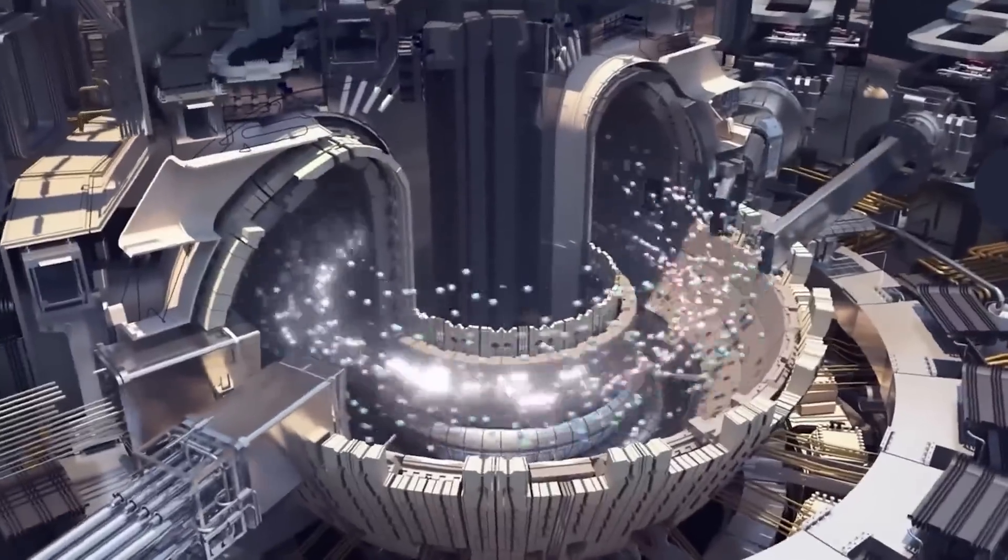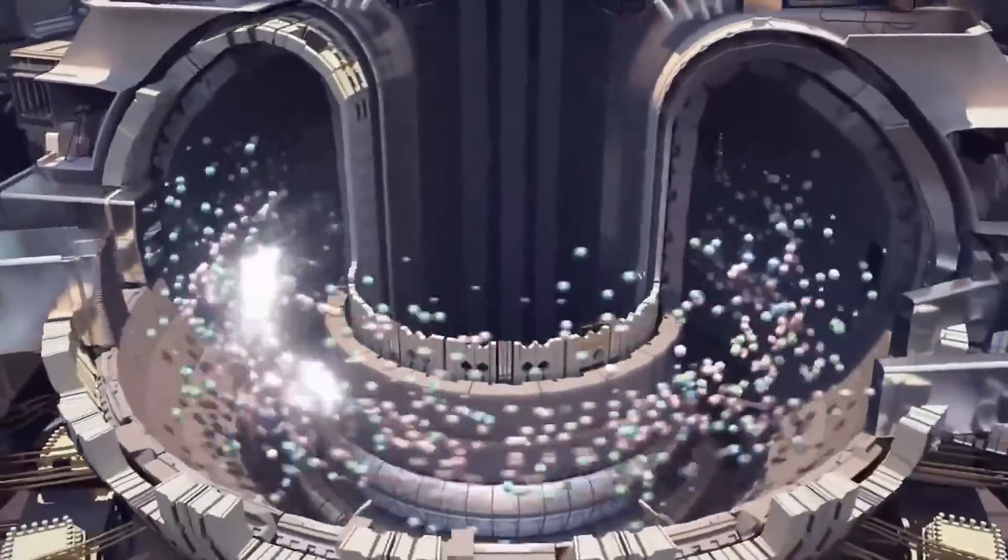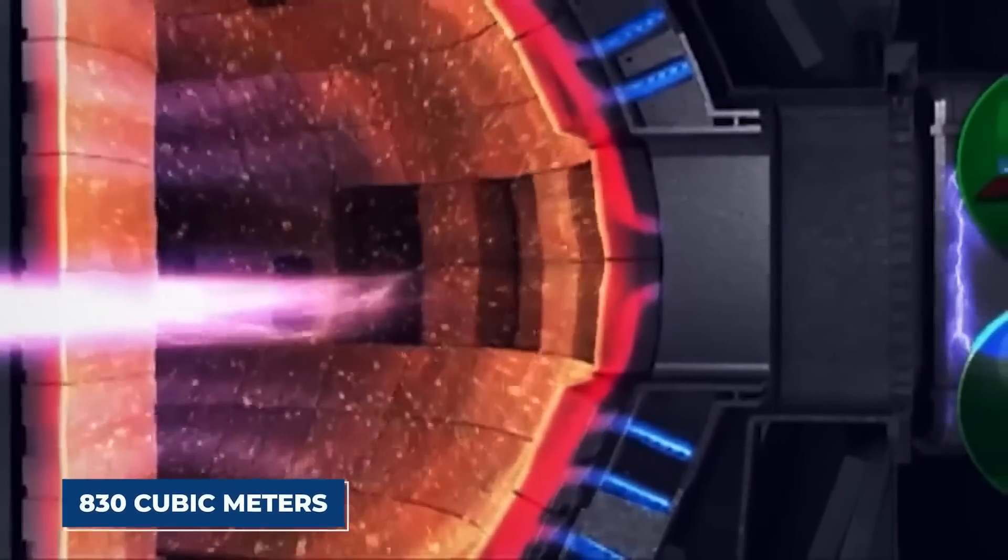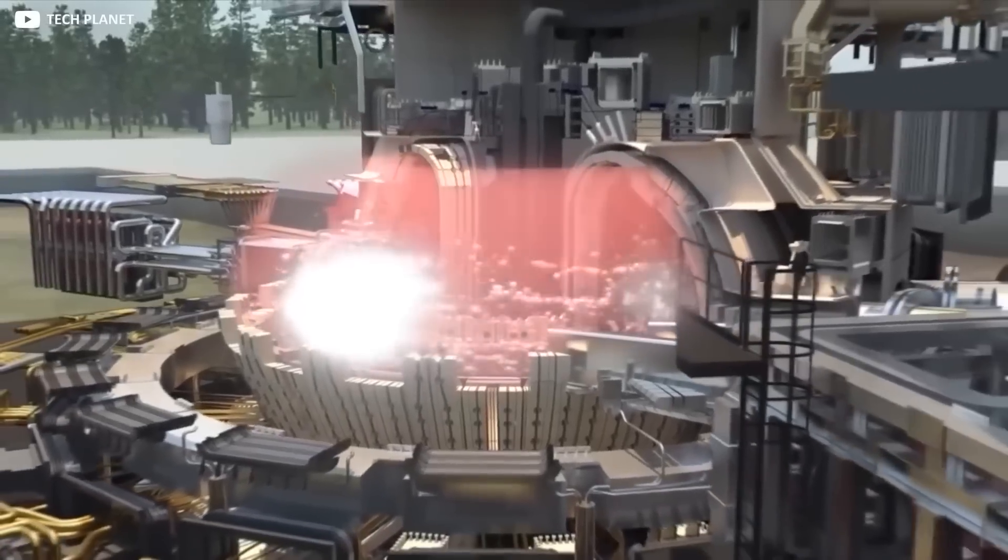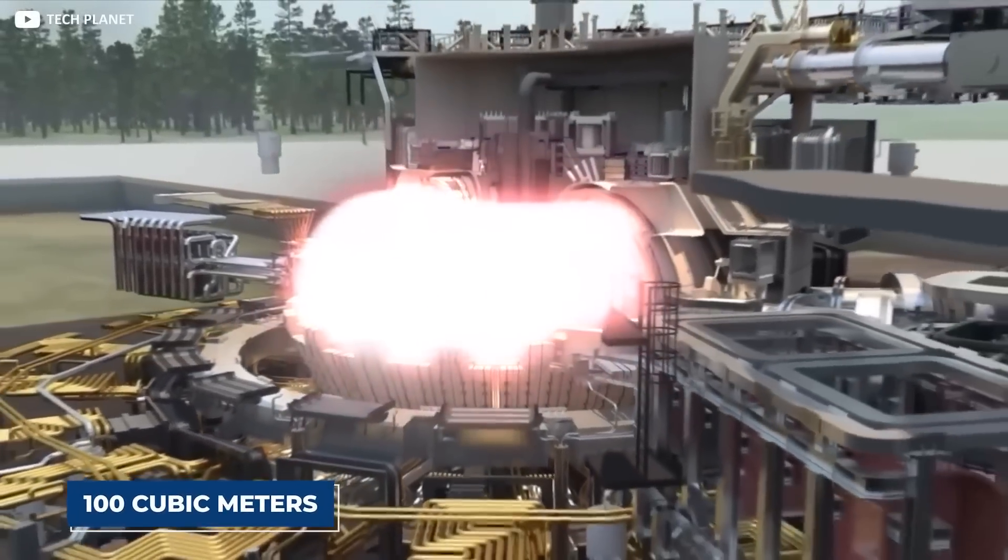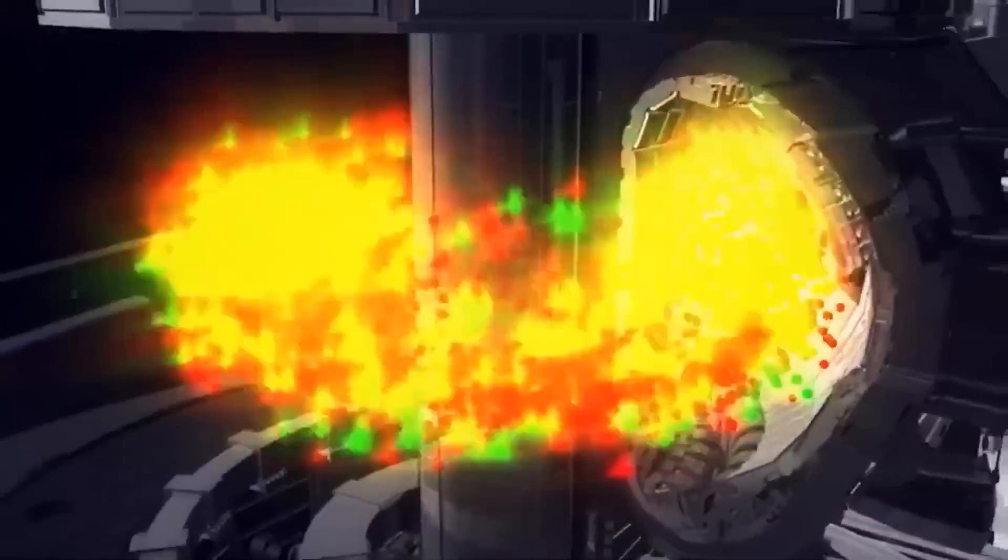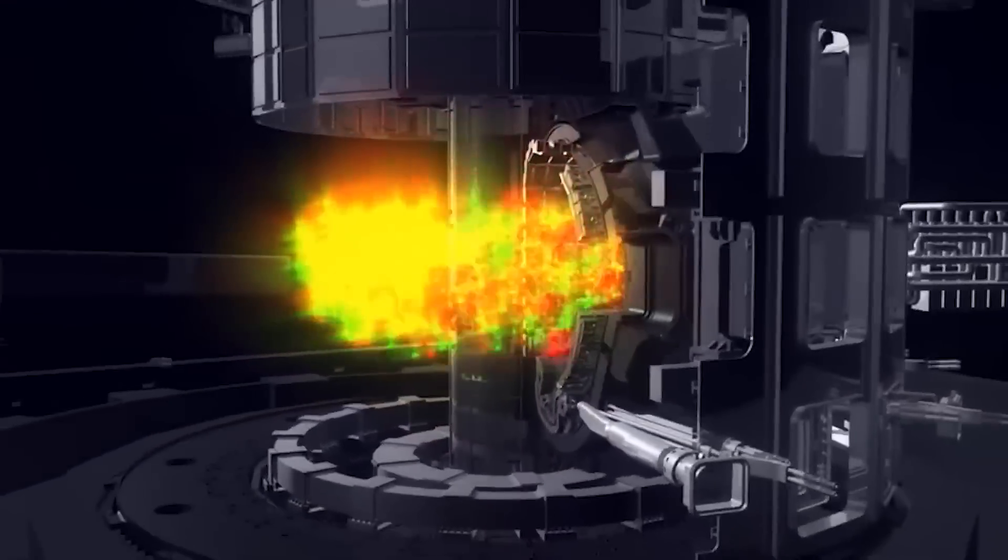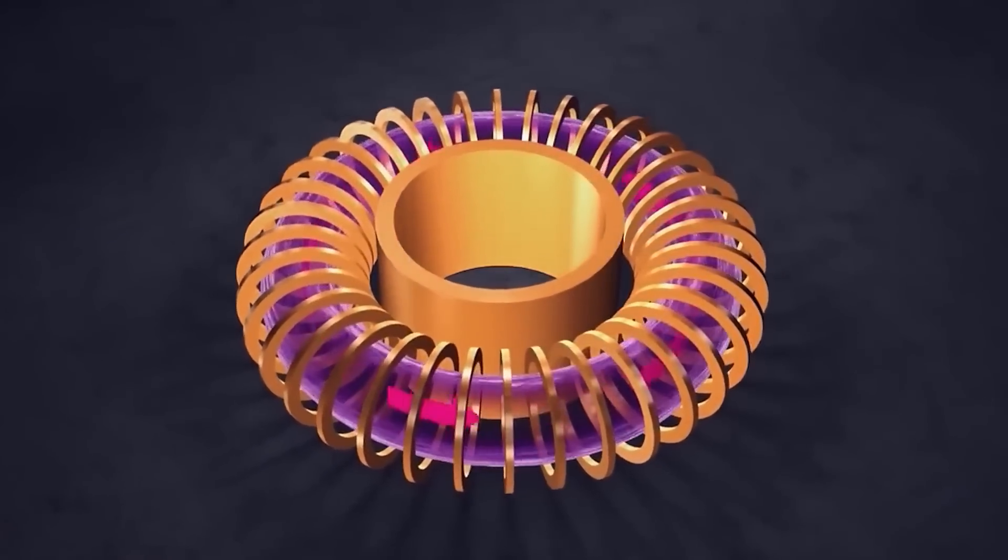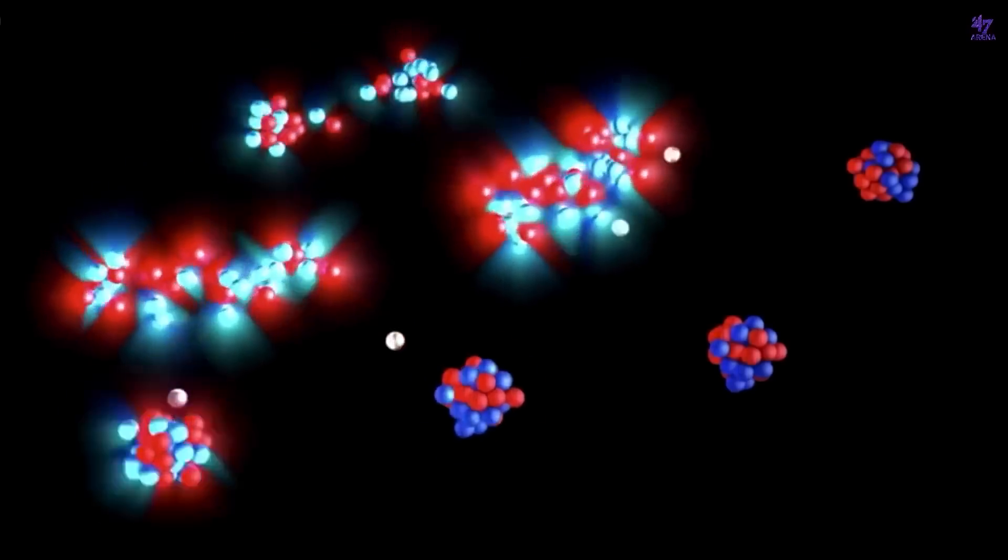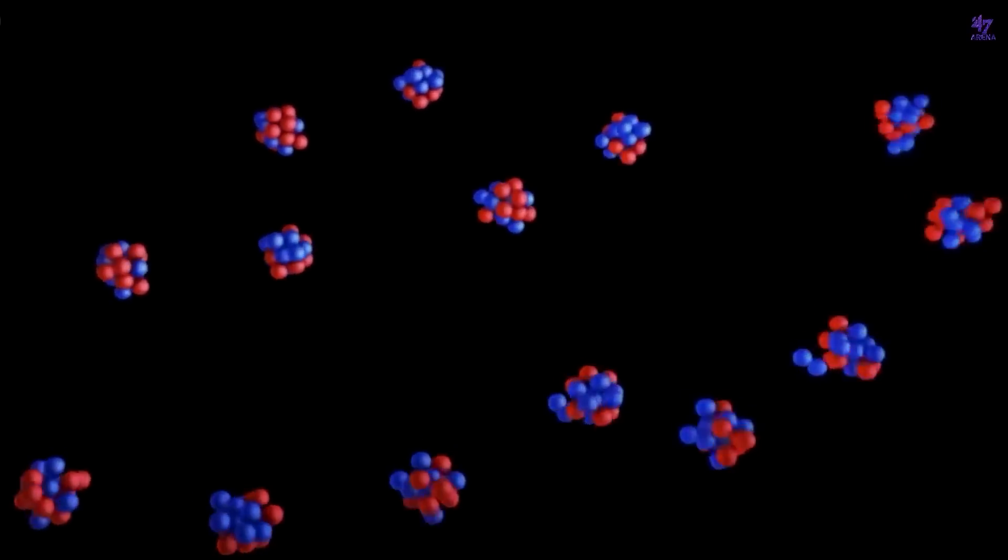The internal volume of the ITER tokamak is record-setting, having a plasma volume of 830 cubic meters. The maximum plasma volume in tokamaks operating is 100 cubic meters. ITER's huge plasma volume will enable it to produce for the first time a burning plasma, in which the majority of the heating needed to sustain the fusion reaction is produced by the alpha particles generated during the fusion process itself.